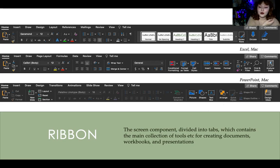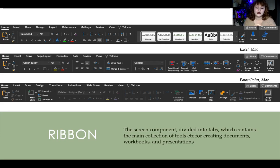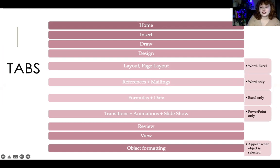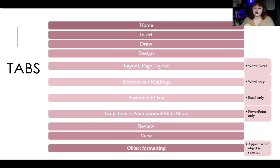To summarize: the ribbon is the screen component divided into tabs which holds the main collection of tools and utilities for creating and configuring your documents, workbooks, and presentations. Tabs shared across programs include home, insert, draw, design, review, and view. Word-specific tabs include references and mailings; Excel-specific tabs include formulas and data; PowerPoint-specific tabs include transitions, animations, and slideshow. Object formatting tabs appear when you click on an object.